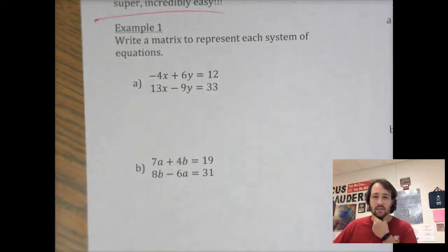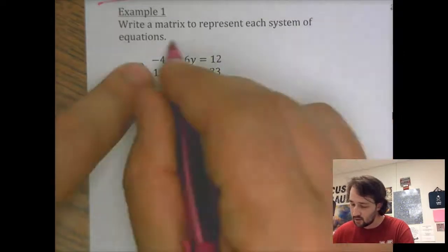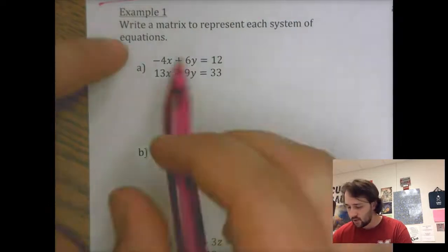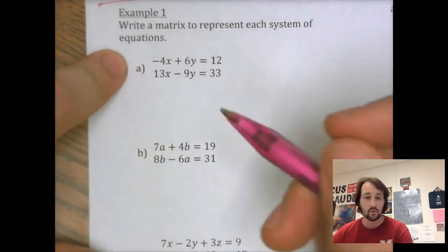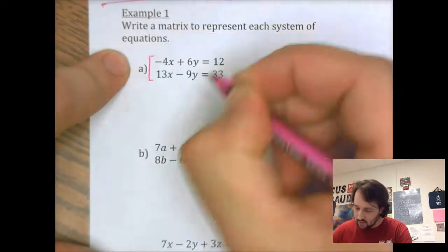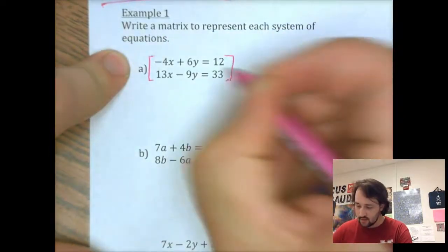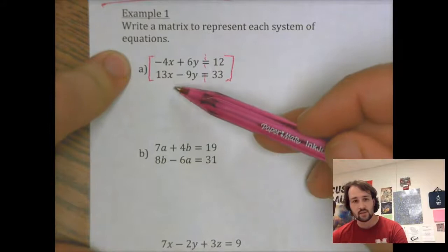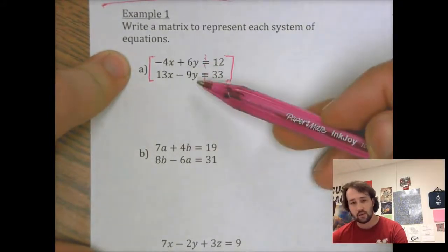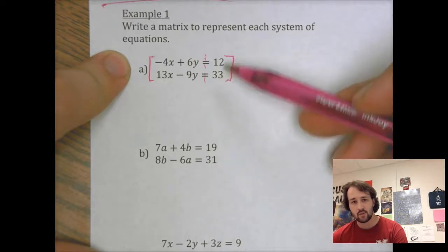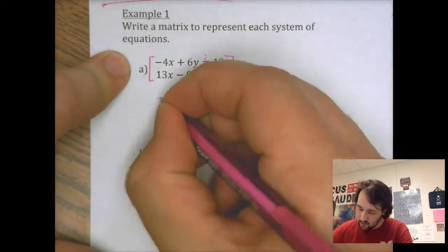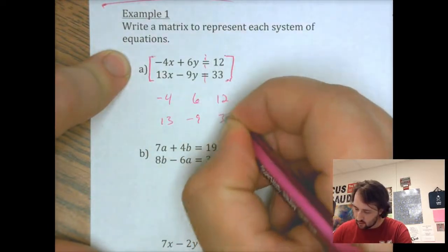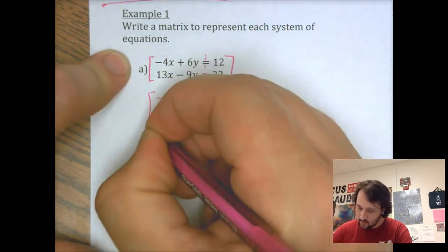Now, to write a matrix to represent each system of equations, I kind of view it like this. I just take these numbers as long as all of the x's and y's are on the same side of the equation and they are in a perfect line with each other, and it equals just whatever our numbers are. I can just take those numbers: negative four, six, twelve, thirteen, negative nine, thirty-three. And that is my matrix.